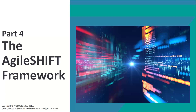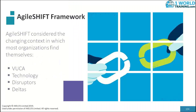Now let's get started on Part 4, where we will talk about AgileShift as a framework. From the start, we have been talking essentially about four things with respect to AgileShift: the VUCA world, technology as an enabler, the disruptors, and of course, the vital delta.